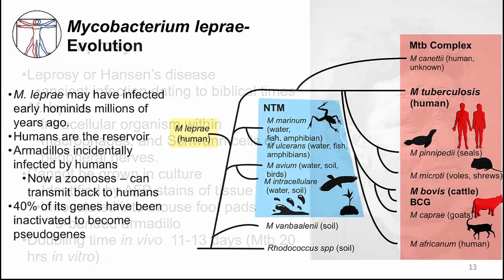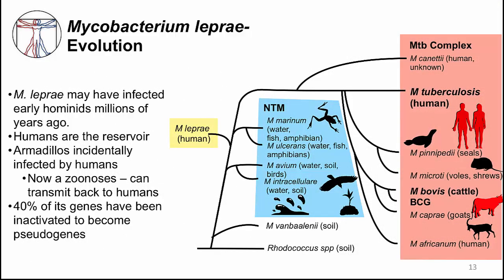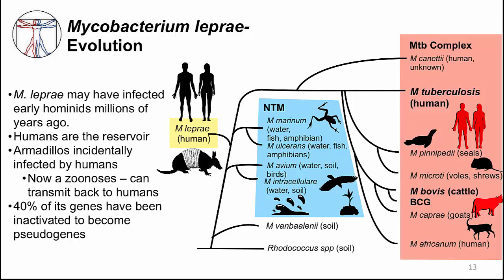It is thought that M. leprae infected early hominids millions of years ago, and as you can see, it is phylogenetically closer to NTMs like M. ulcerans or M. marinum than to MTB. M. leprae can only live in humans, who are the main reservoir. However, armadillos were incidentally infected by humans and can now potentially transmit the infection back to humans. M. leprae is so well adapted to its niche in humans that it has lost many of its genes — it has less than half the genes found in MTB, and about 40 percent of the genes in the M. leprae genome have been inactivated.